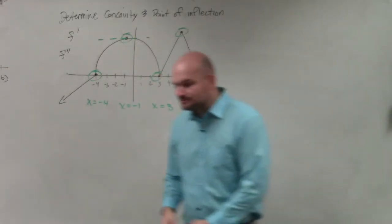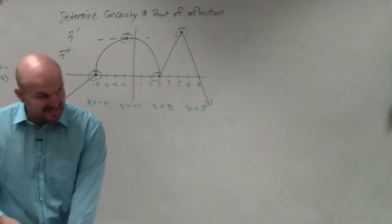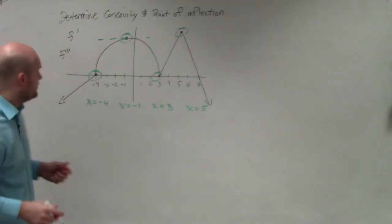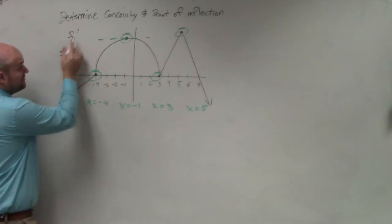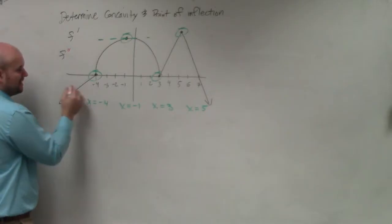So to determine which one is actually a point of inflection or not, we need to look at their slopes. Because remember, the slope would be the second derivative. This is f prime. We want to look at what the slopes are, which would be f double prime.